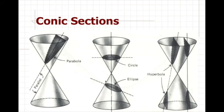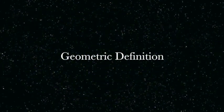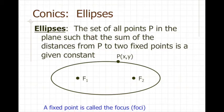This lesson is about the ellipse. An ellipse is defined as the set of all points P in a plane such that the sum of the distances from P to two fixed points is a given constant. Those two fixed points are each called a focus, and together they are called foci.